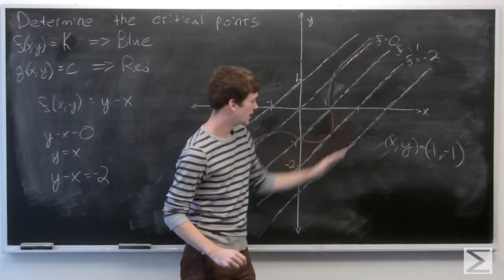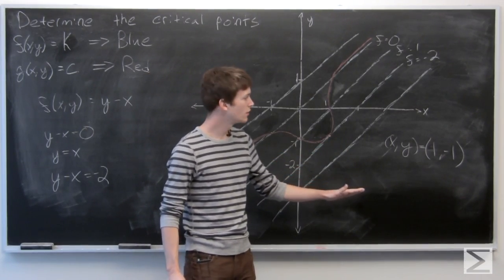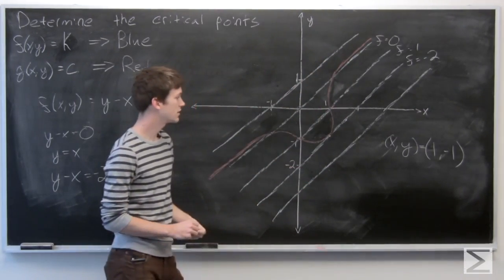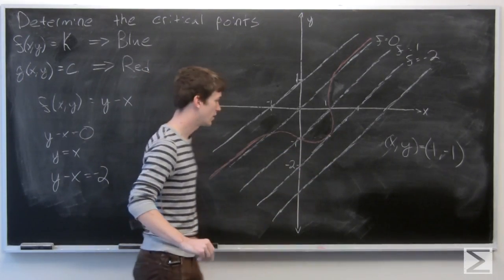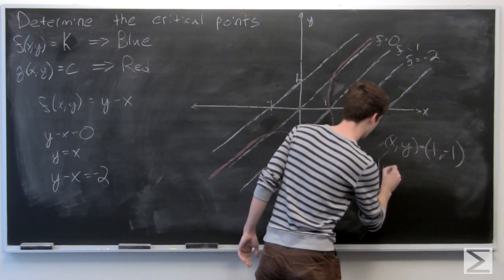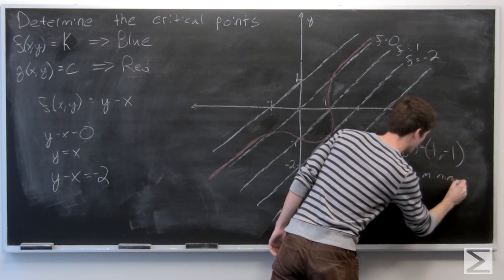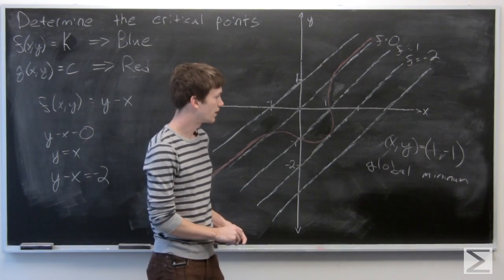But as I stated earlier, it looks as though as we move in this direction, we're not going to actually intersect the constraint function ever. So it appears as though we have a global minimum at (x,y) equals (1, -1).